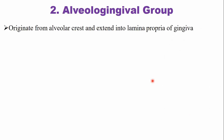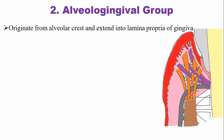The next group is the alveologingival fibers. These fibers originate from the alveolar crest and extend into the lamina propria of the gingiva. In the picture, the orange-colored fibers represent the alveologingival fibers originating from the alveolar bone and inserting into the connective tissue of the gingiva.